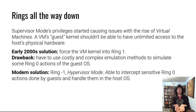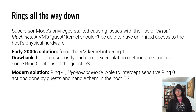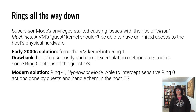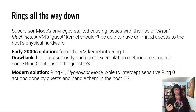In a virtualized setup, you have a host operating system and inside it run guest operating systems. These guest operating systems should not have unlimited access to your hardware. If they had true ring 0 access, they could shut down your machine and do a lot of things you don't want a guest VM doing to your host. The solution in the early 2000s — when the first versions of VMware came about — was to force the guest kernel into ring 1.